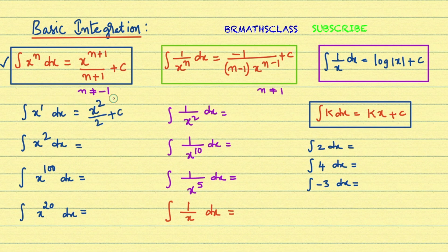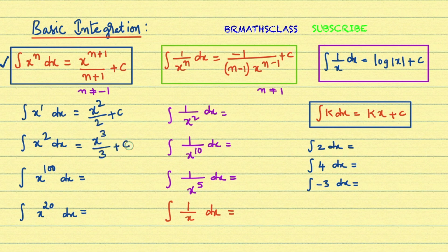It's very simple — when power 1 is there, you raise it by one number. For example, the integral of x squared dx: from this formula, you raise the power by one, giving x power 3 divided by 3 plus c.